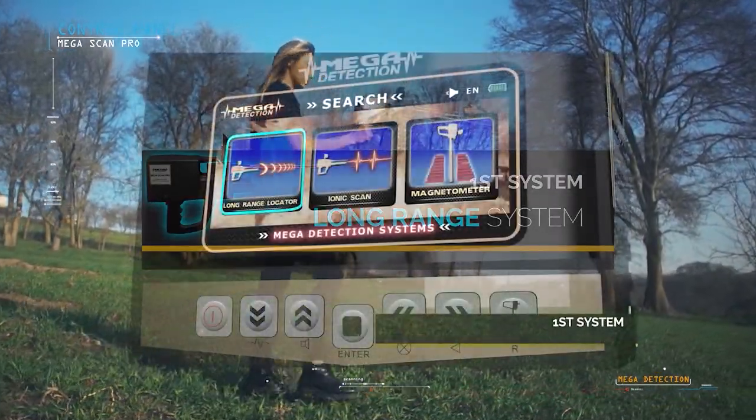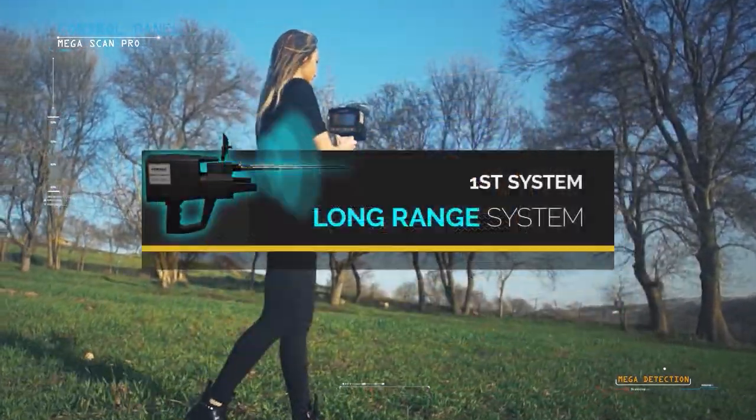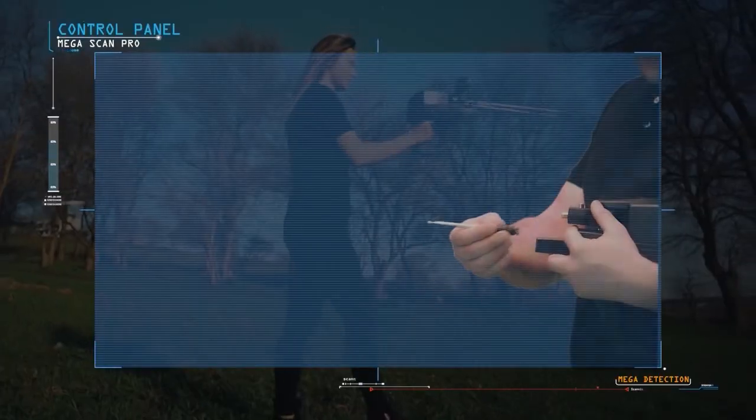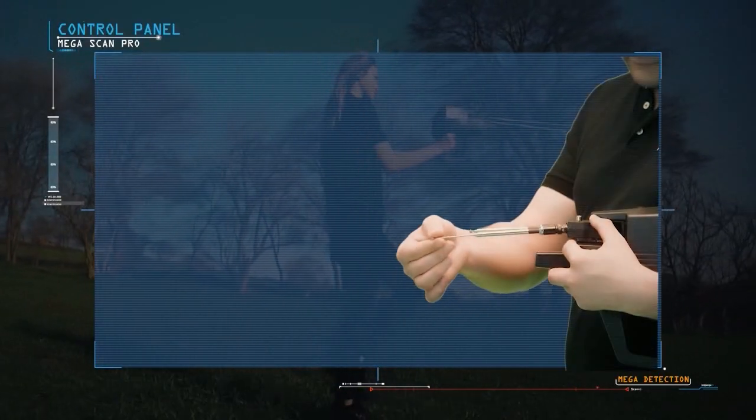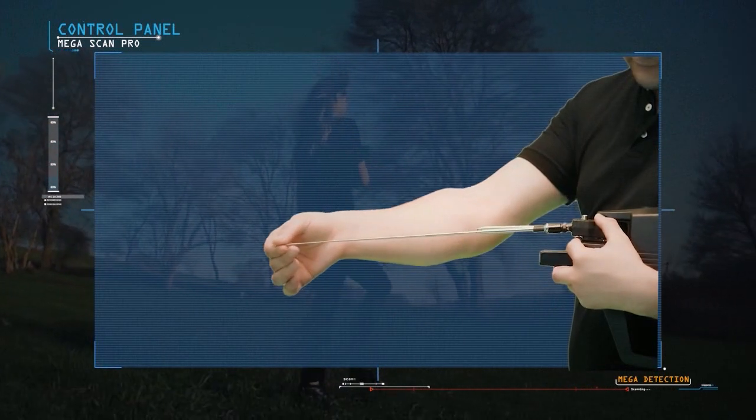To use the Long Range Locator System, the device is set up as follows. The antennas are connected to the main unit of the device, then the antennas are pulled out to their maximum length possible.